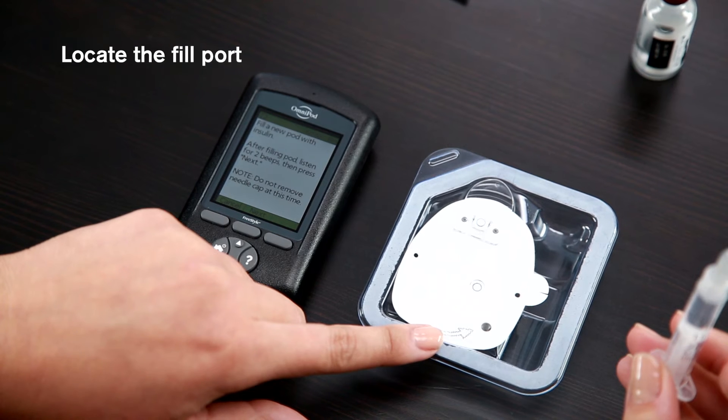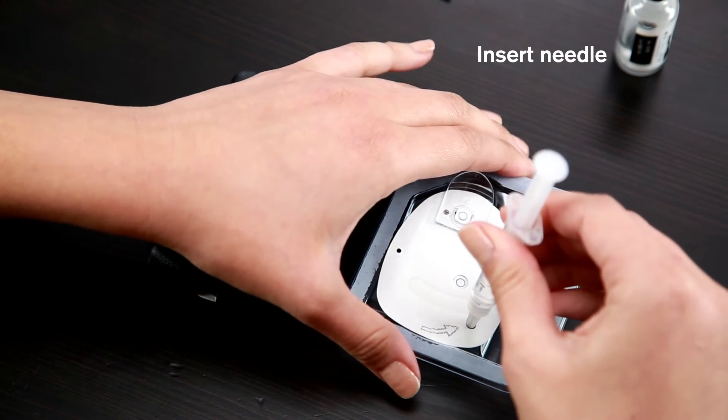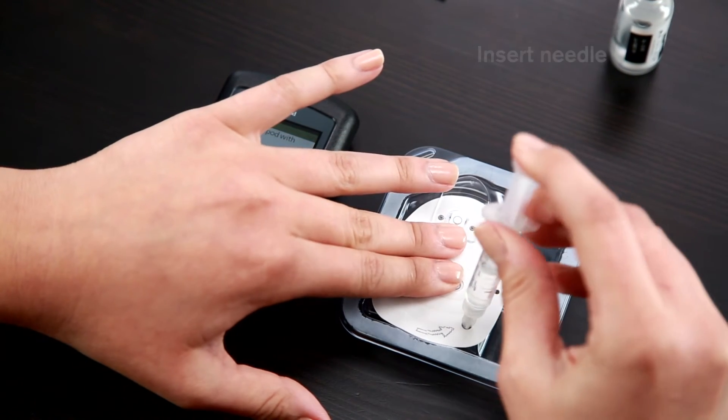Locate the marked black arrow on the underside of the pod. This is the fill port. Insert the needle straight into the fill port. It is easiest to keep the pod in its tray while filling.